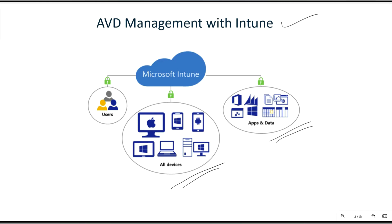When I say managing applications, it includes controlling the application. For example, you can apply data protection policies such as preventing users from taking screenshots or copying data to or from applications. For example, if you have an Outlook email on your mobile, you can apply DLP policies to Outlook so that you can securely control it and prevent users from stealing data from that application.